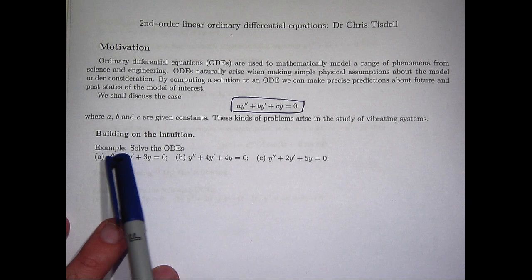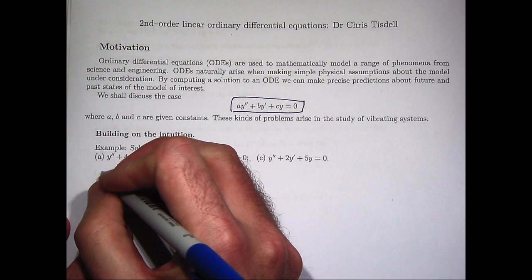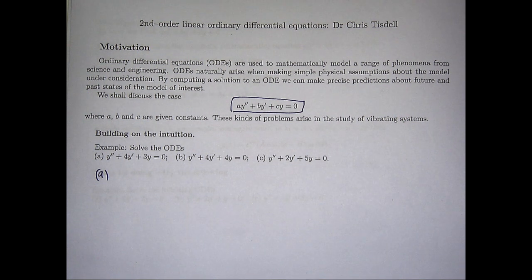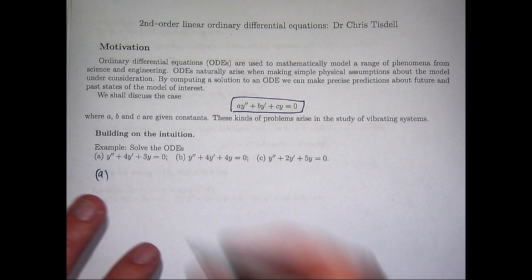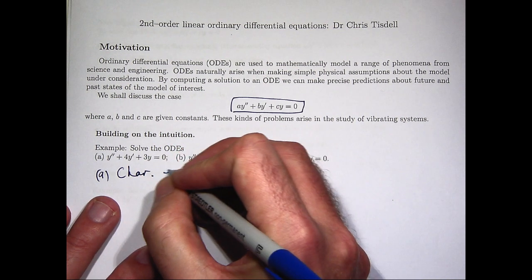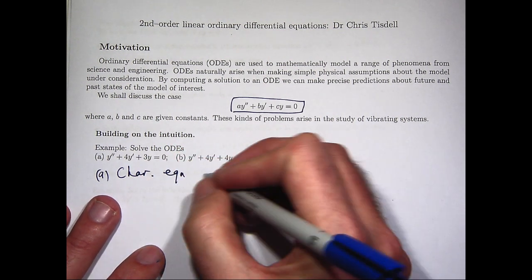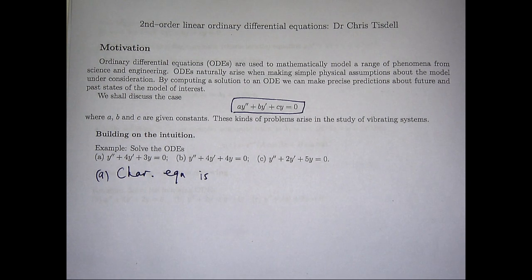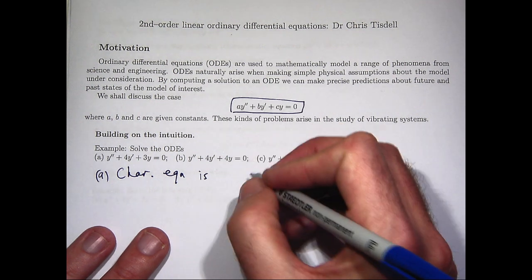So here we are asked to solve this ODE here. And essentially the analysis changes to the study of a characteristic equation, a special polynomial equation, which is a quadratic equation. So we call this the so-called characteristic equation. Now in some lectures I've used r for the characteristic equation's variable. Here I'm just going to use lambda.